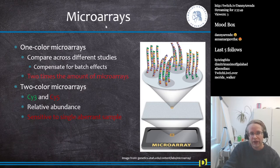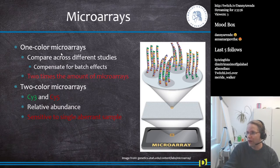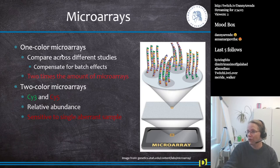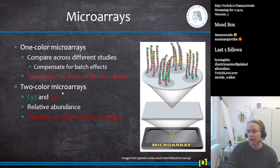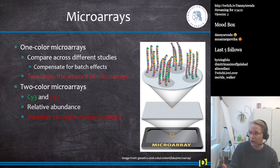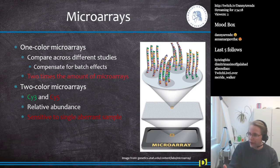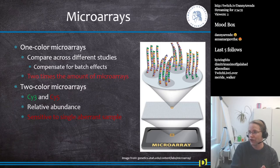Microarrays come in two different forms. A one-color microarray gives you an absolute quantification and allows comparison across different studies with easy batch effect compensation, but requires twice as many arrays since only one sample per array. Two-color microarrays are used in case-control studies: for example, cancer tissue labeled red and normal tissue labeled green are put on the same array, giving you relative abundance — whether a gene is higher expressed in cancer or normal tissue.